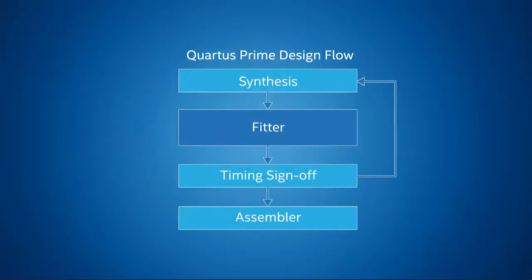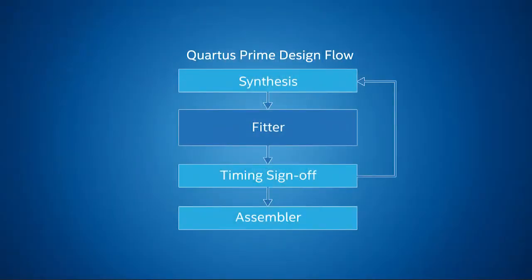By now you're probably familiar with the design flow in Quartus. The design is synthesized into the basic elements of the FPGA. Next, the elements are placed into actual physical locations and interconnected. Finally, you analyze the resulting timing and fix any timing violations. A small project may have less than 10 iterations, whereas a large, high-performance project may have dozens.